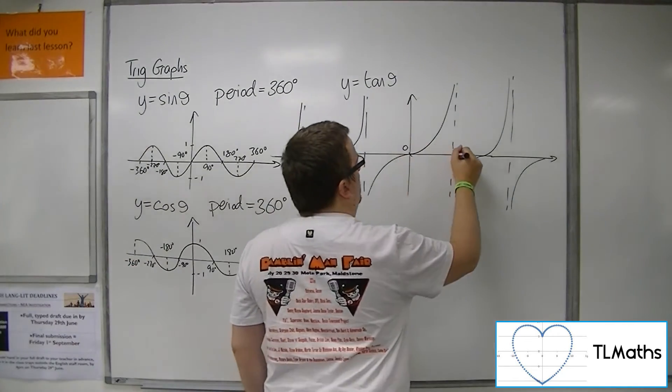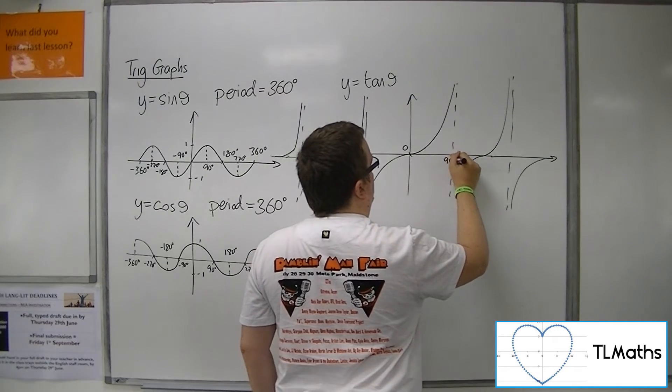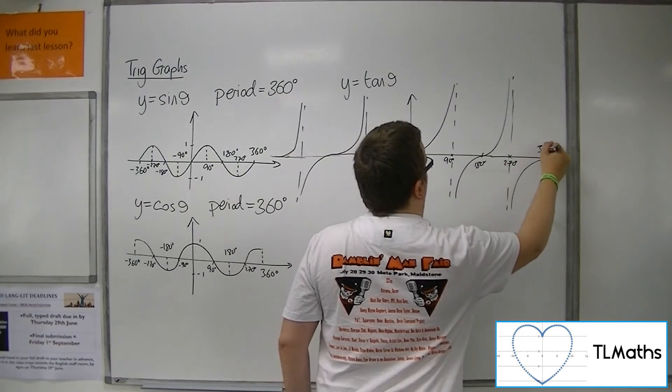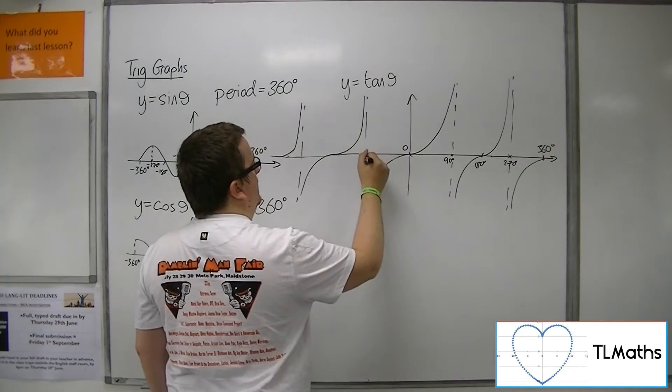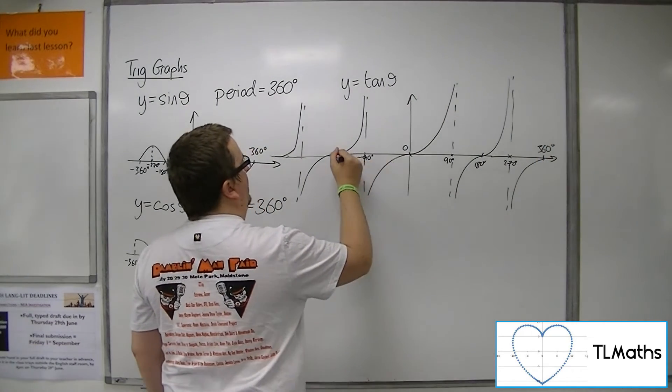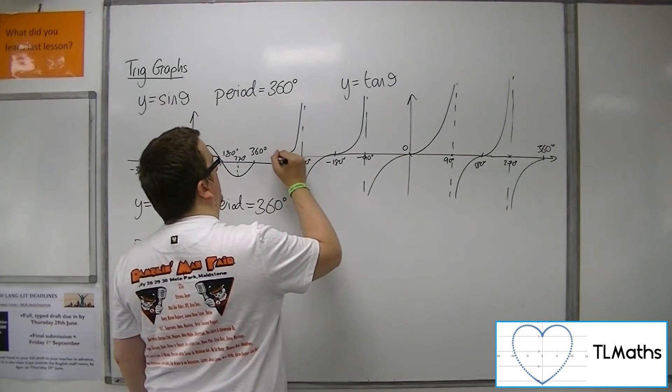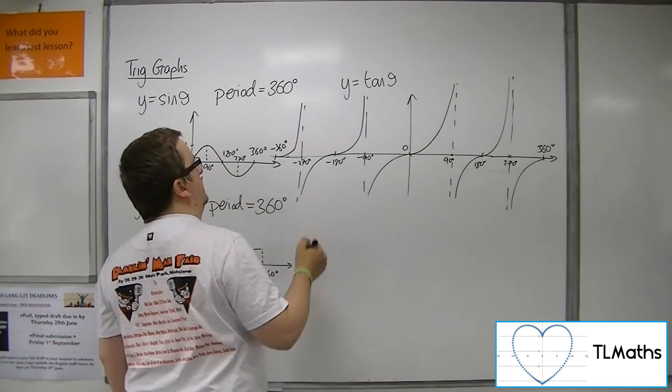There's 0, 90 degrees, 180, 270, 360, minus 90, minus 180, minus 270, and minus 360.